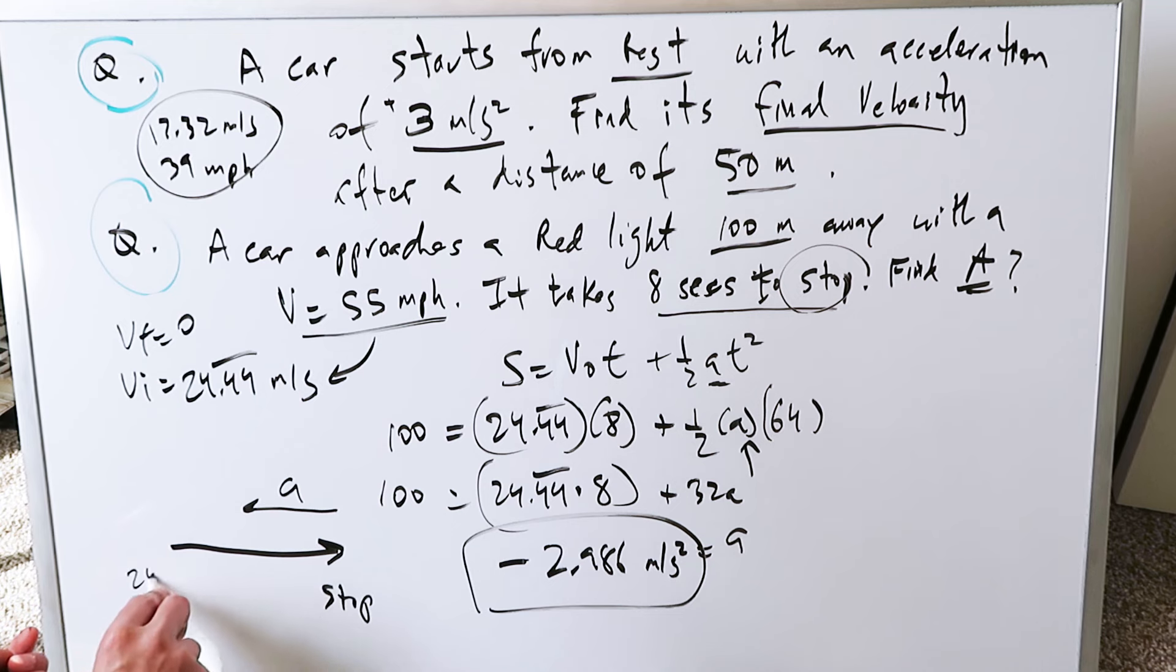If it's coming here from 24.44 to 0 over a period of time, the rate of change must be negative because the object will stop. It must be decreasing with time. Hence, your object will stop.